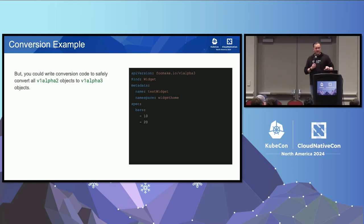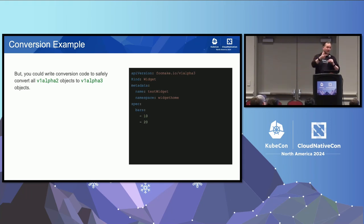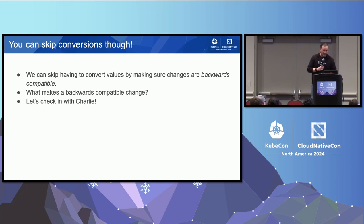You can write conversion code to safely convert from v1alpha2 to v1alpha3, because v1alpha2 has one bar and v1alpha3 has an arbitrary number of bars. If you're converting from two to three, you take that one bar, put it into the first element in the list, and you're good — no information is lost and the schema makes sense.